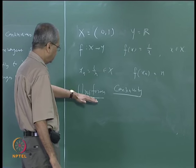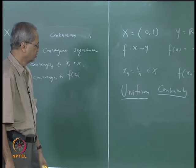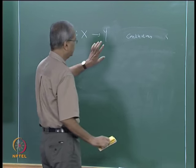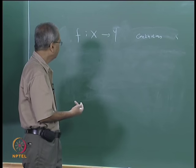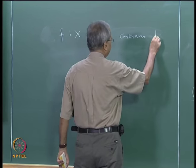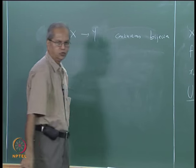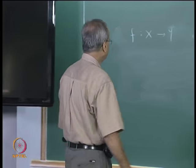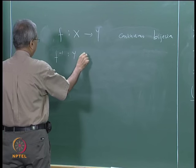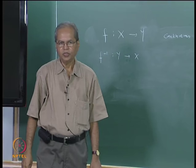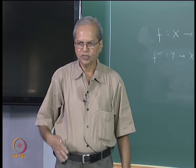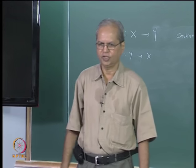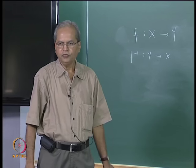Before coming to the definition of uniform continuity, let me introduce one or two more definitions. Suppose x and y are two metric spaces and f from x to y is continuous. Suppose in addition f is also a bijection — that is, it is one-to-one and onto. Then we can define the inverse function f-inverse from y to x, but f-inverse may or may not be continuous.